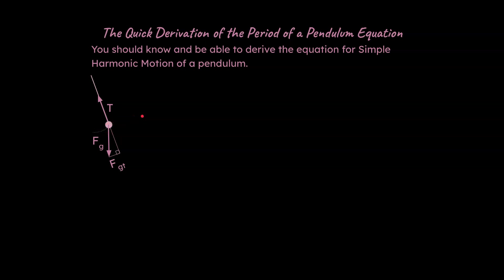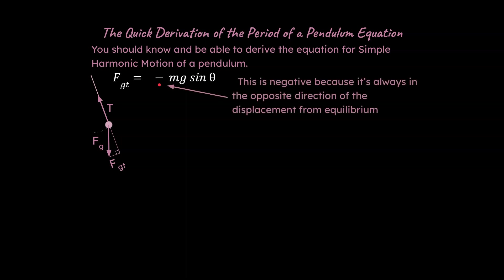Let's think about this plane and the sum of the forces happening here. The main force in the tangential axis is just −mg sinθ. That's going to be this FGT value, and we have to treat this as negative because it's always going to be pointing in the direction opposite the displacement from the equilibrium position. So it's very important that we keep track of that.